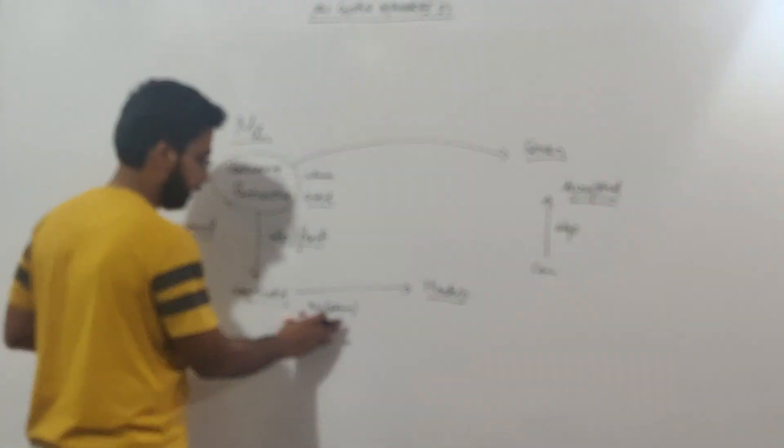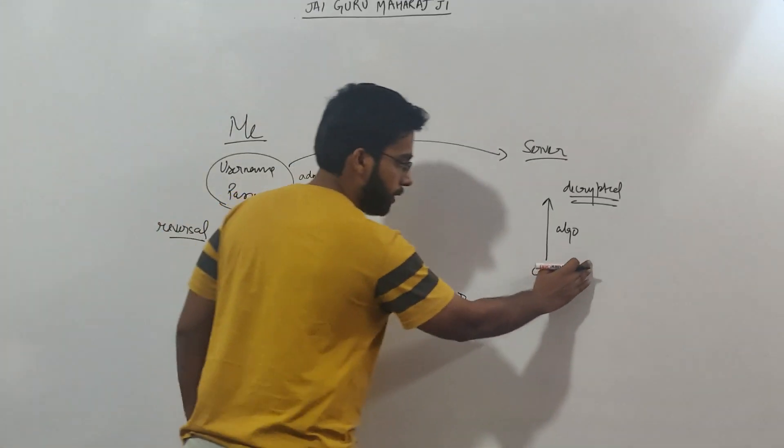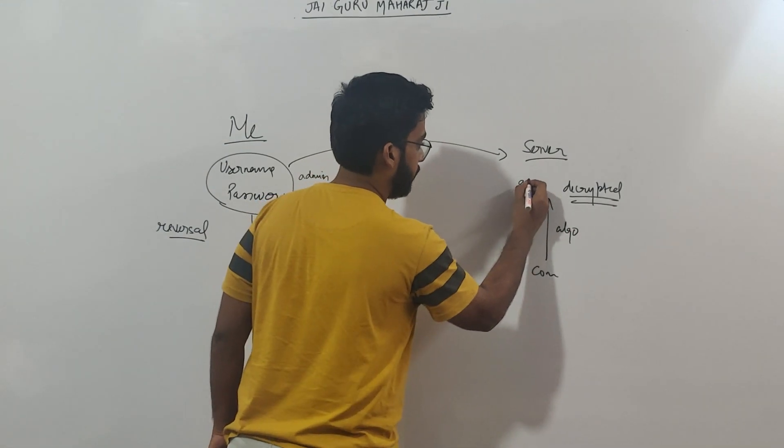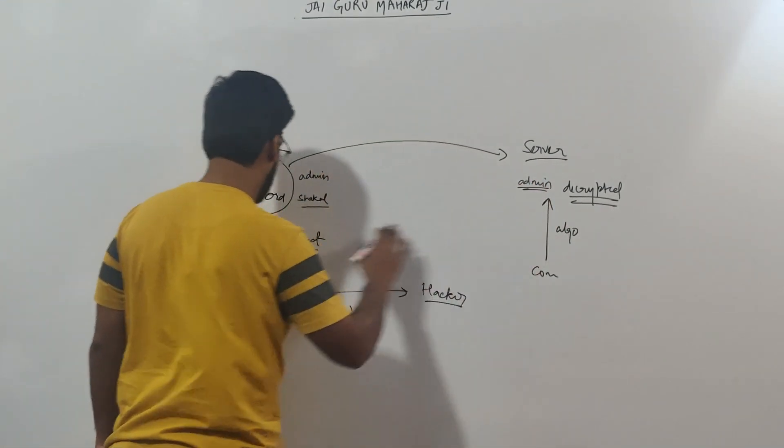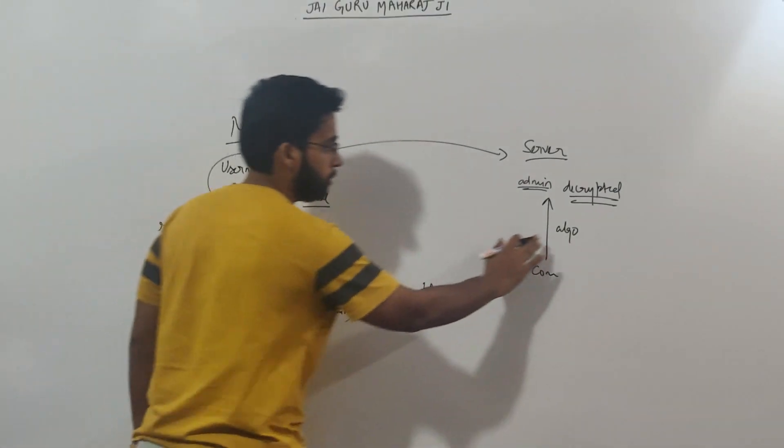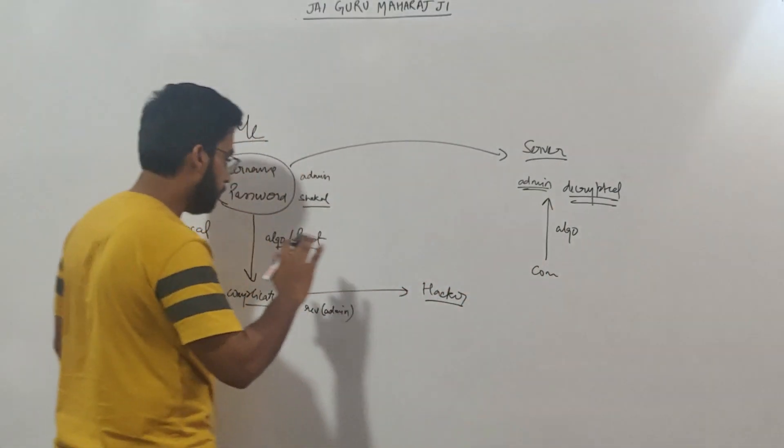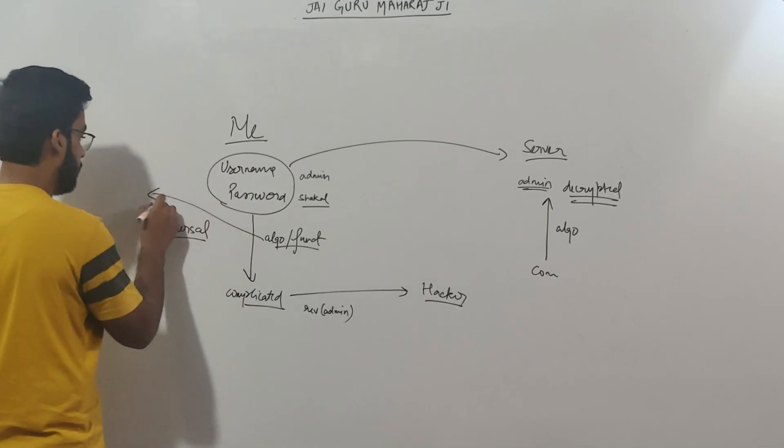Alright. Now if I reverse something, if I reverse admin and then I re-reverse the admin, I get admin again. Right? Simple. So based on the same algorithm which I use for encryption, I can use it to decrypt. Right? Now this algorithm is known as cipher.